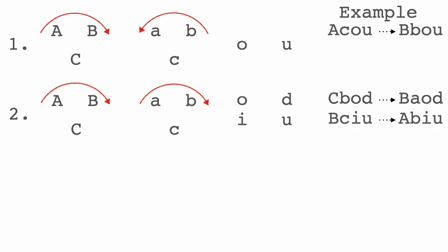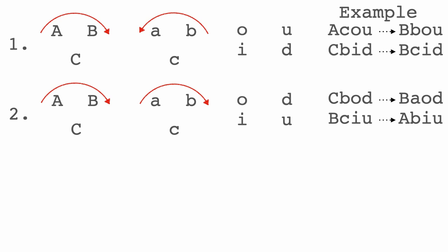An example of move two is B C I U changing to A B I U. And finally, if the orientations are inward and down, then again we are back to the first type of move — and an example would be C B I D to B C I D.